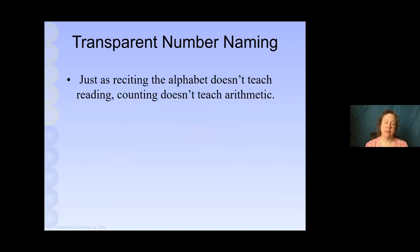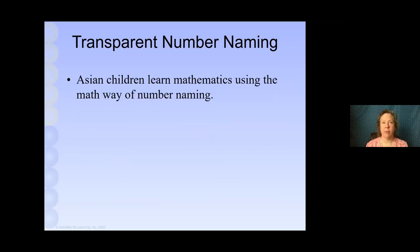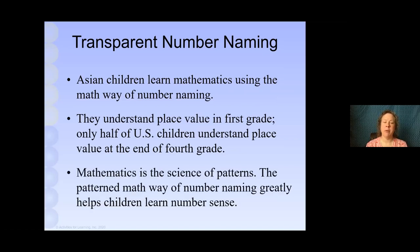Just like reciting the alphabet doesn't teach reading, you know, if your child can sing the alphabet song, that doesn't mean that he or she knows how to read, right? Well, being able to count to 100 doesn't mean that they understand arithmetic. And just as we first teach the sound of letters, we must first teach the name of the quantity. This is the math way of naming numbers, or the transparent number naming system. Interestingly, children in Asia learn mathematics using the math way of number naming. And they understand place value in first grade. Only half of U.S. children understand place value at the end of fourth grade. So, why is that? Well, remember, mathematics is the science of patterns, and the patterned math way of number naming greatly helps children learn number sense.